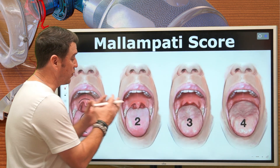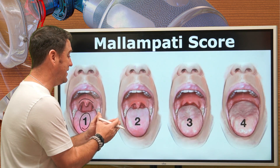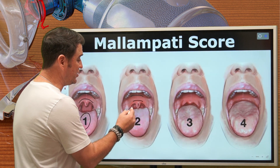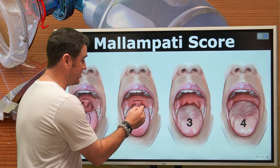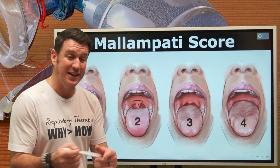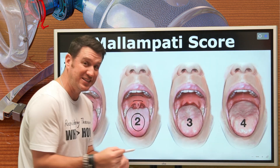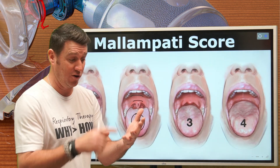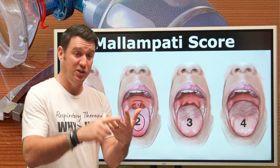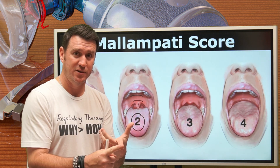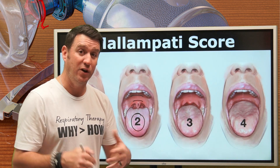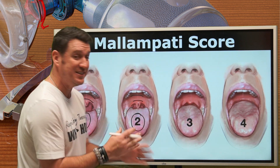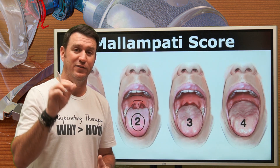Let's say you perform this maneuver and you can see the hard palate, the soft palate, the uvula, but you can't see the pillars. Well, that would be classified as a two — we've lost one component. The four components we're looking for are hard palate, soft palate, uvula, and pillars. If the pillars are missing but you can see the other three components, then you have a Mallampati score of two.